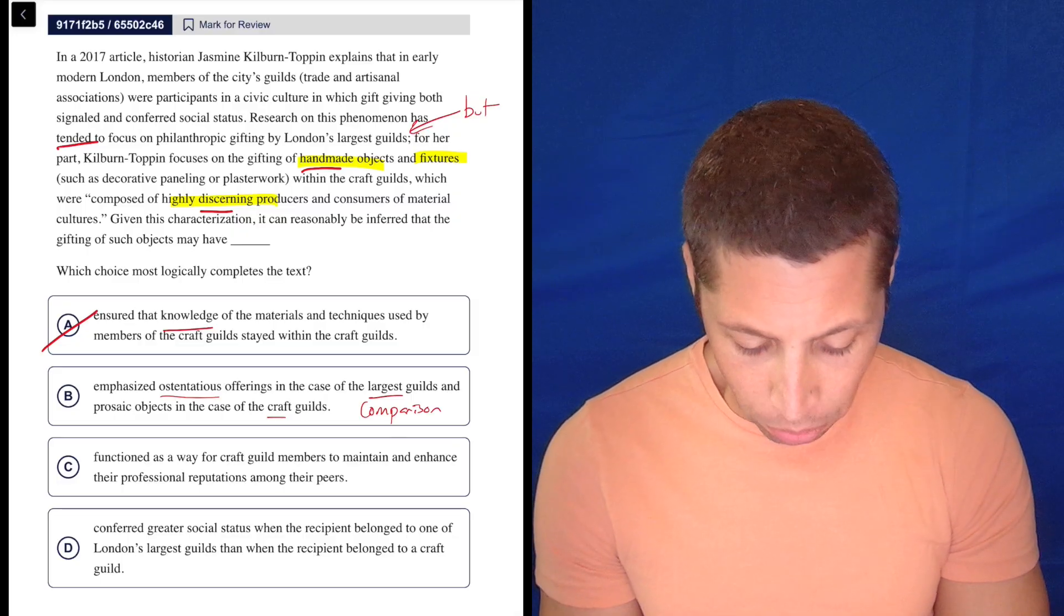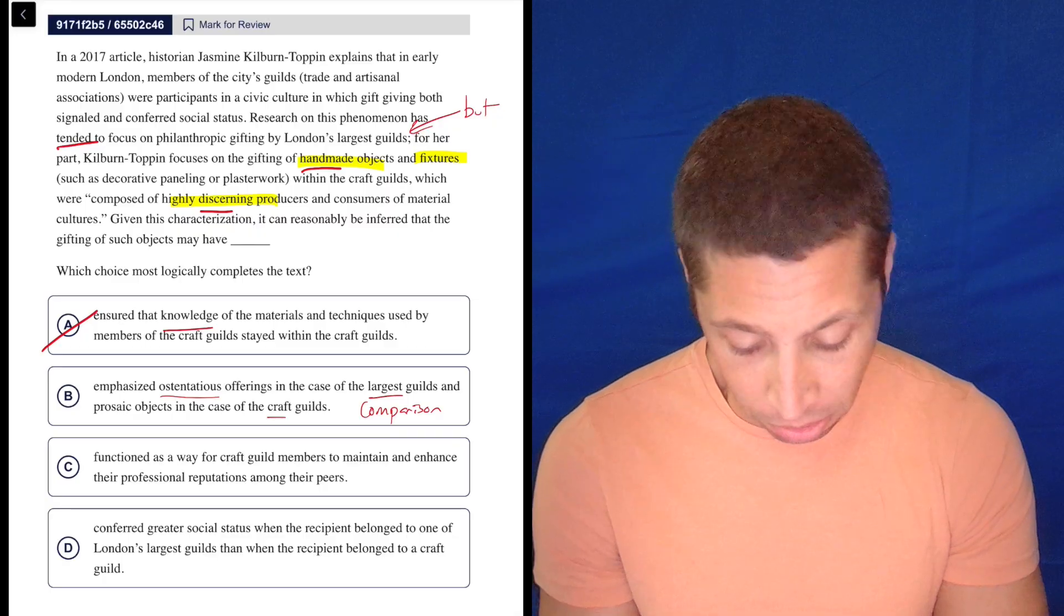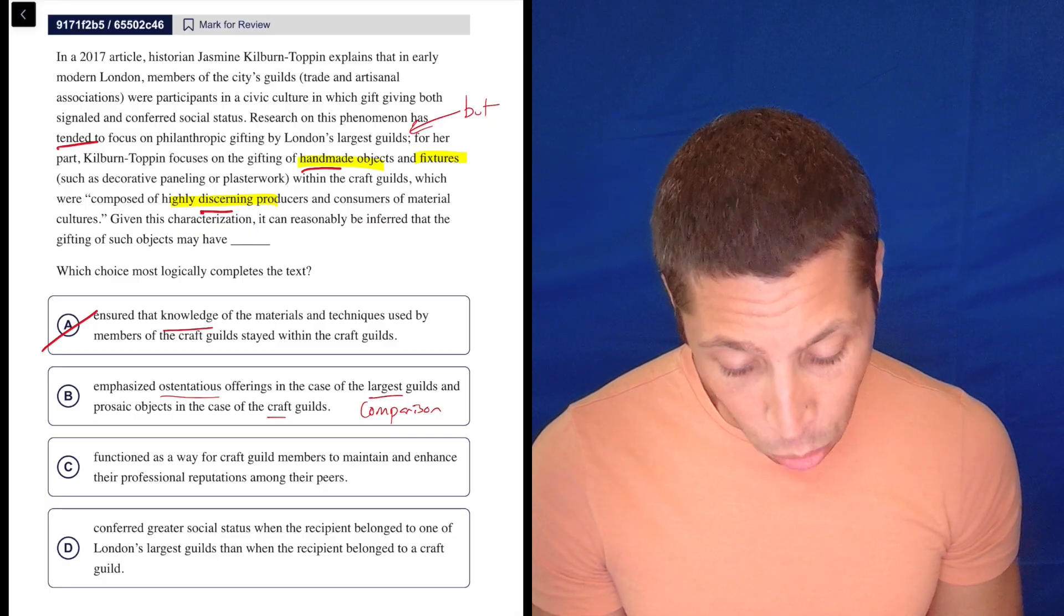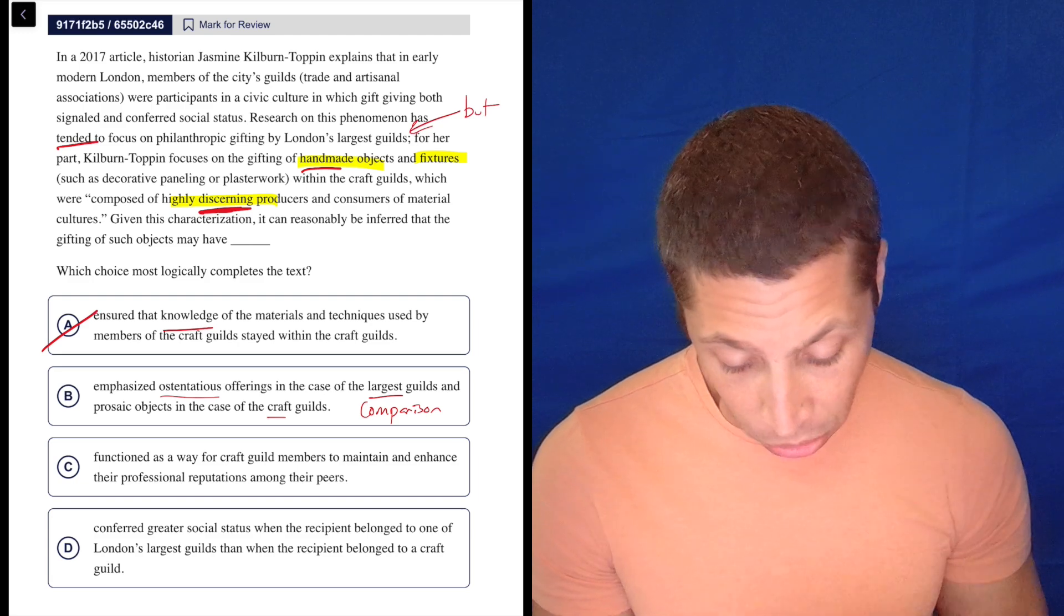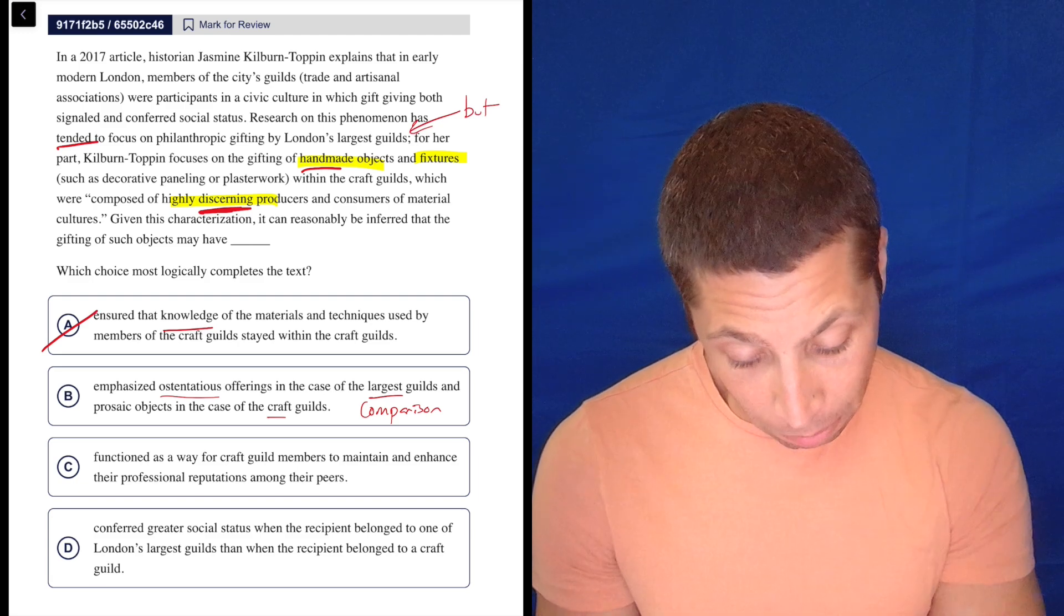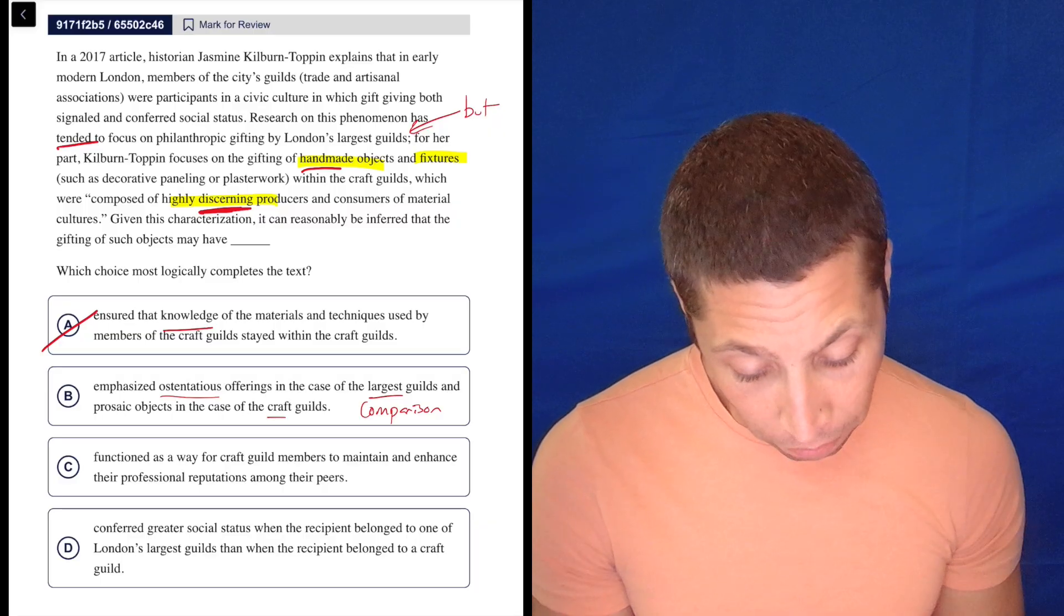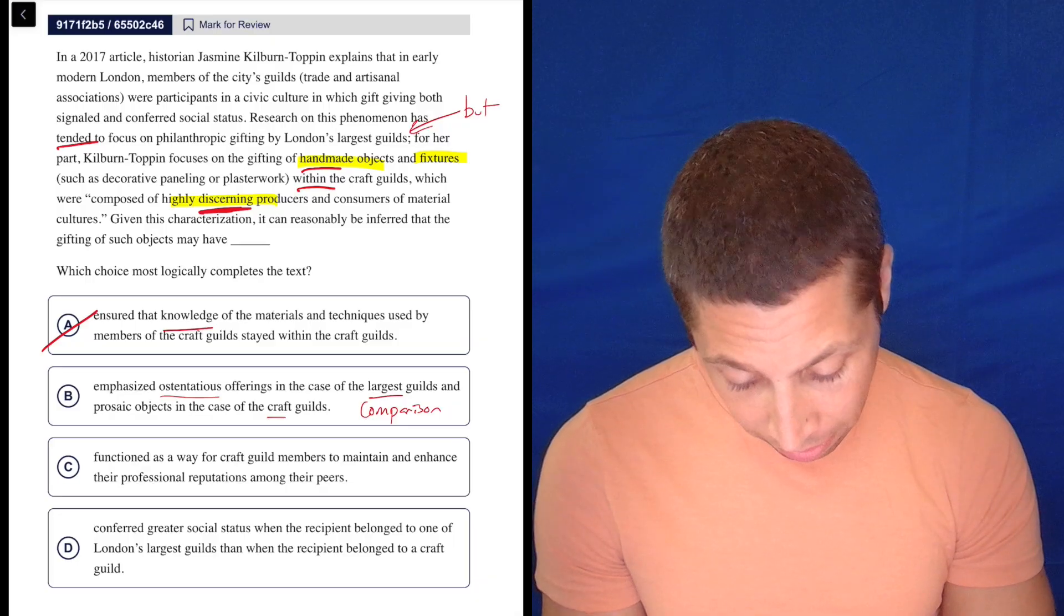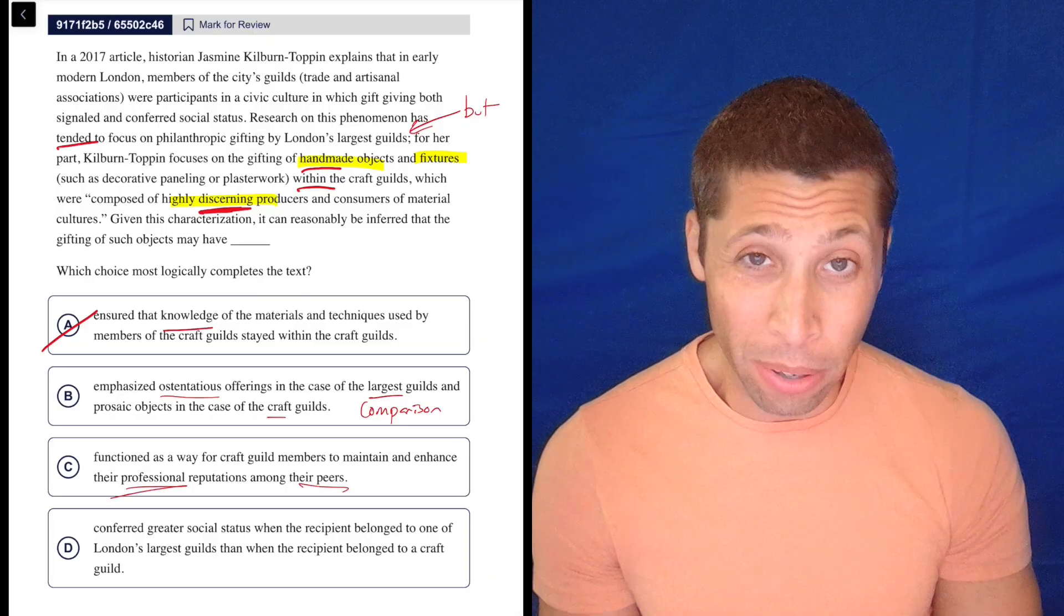See, it functioned as a way for craft guild members to maintain and enhance their professional reputations among their peers. Okay, maybe. Well, because they're giving them to highly discerning producers and consumers as well. So they're giving them to other people who are in that guild, right? Within the craft guilds. Maybe. It's about the professional reputation. It's about their peers. It's within the guild itself. So okay, maybe.